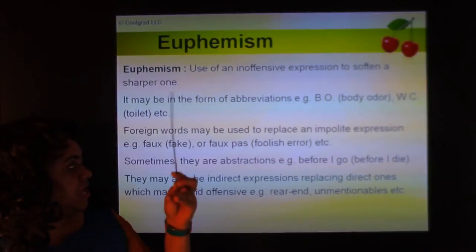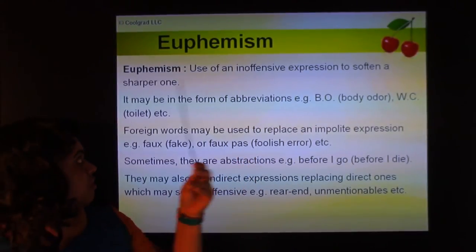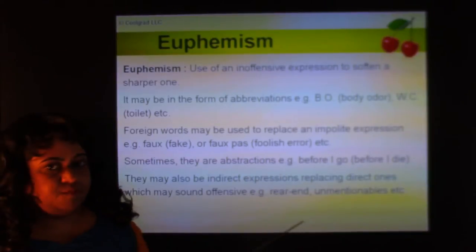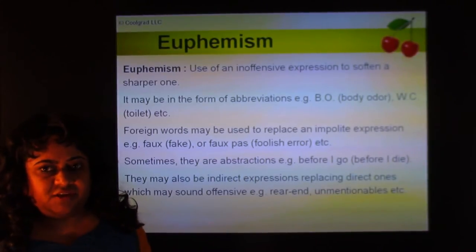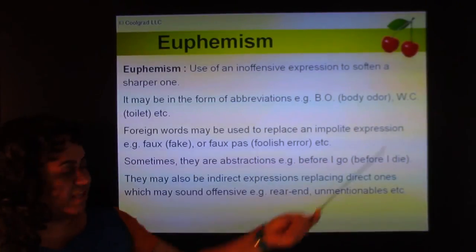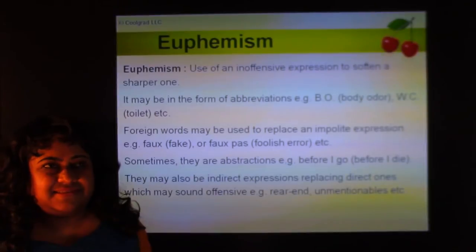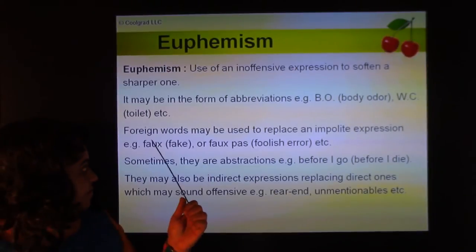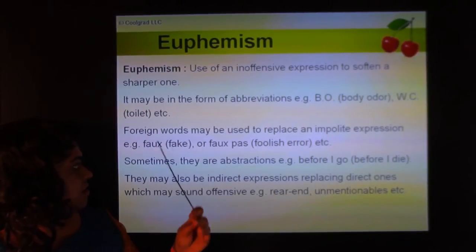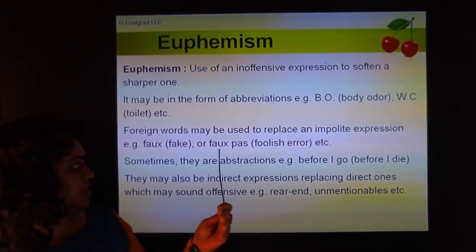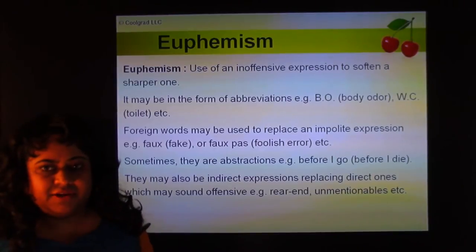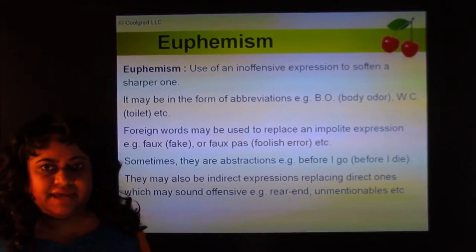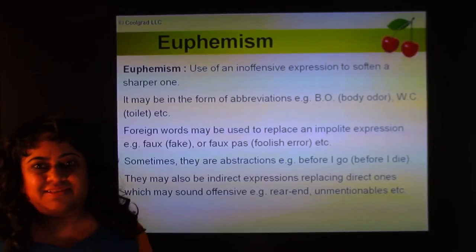A euphemism is the use of an inoffensive expression to soften a sharper one. It may take the form of abbreviations — like saying 'BO' instead of body odor, or 'WC' instead of toilet. Foreign words may replace impolite expressions — like 'faux pas' instead of 'foolish error.' Abstractions also work: 'before I go' instead of 'before I die.' Indirect expressions replace direct ones that may sound offensive.